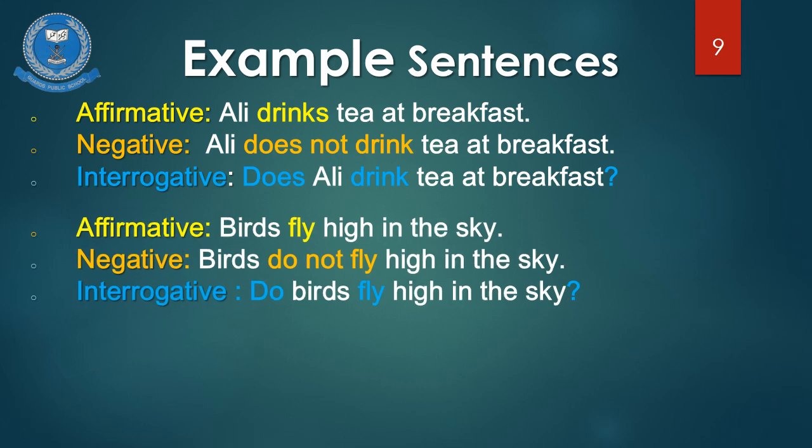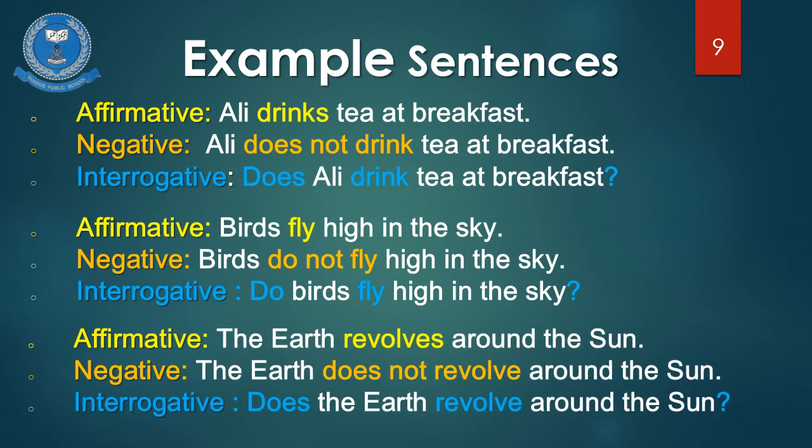Sentence number 3. Affirmative: The earth revolves around the sun. The subject is singular, so we add 'S' with the verb, forming it into 'revolves'. Negative: The earth does not revolve around the sun. Interrogative: Does the earth revolve around the sun? Our subject is singular, so we have used 'does' as our helping verb for negative and interrogative. Since we are using 'does', we would not add 'S' with the verb. Students, remember this is a natural fact sentence, so whenever you form such sentences, you will always use present indefinite tense.